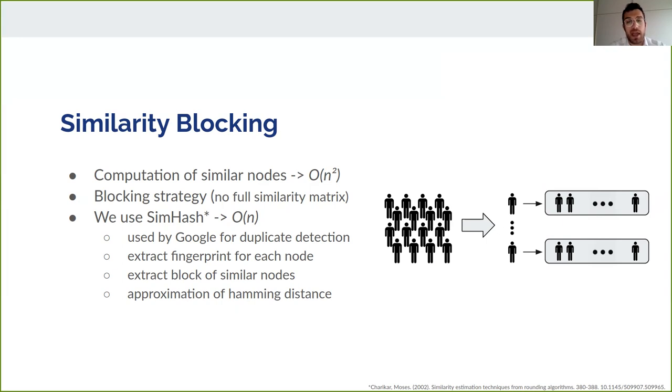To solve these scalability issues, we used the SimHash algorithm to reduce the number of comparisons, scaling linearly to the number of users. It works by extracting a fingerprint for each node, considering the fact that very similar nodes end up having almost the same hash. Then, creating an index that we can query for the extraction of similar routers in order to get the blocks of similar ones.